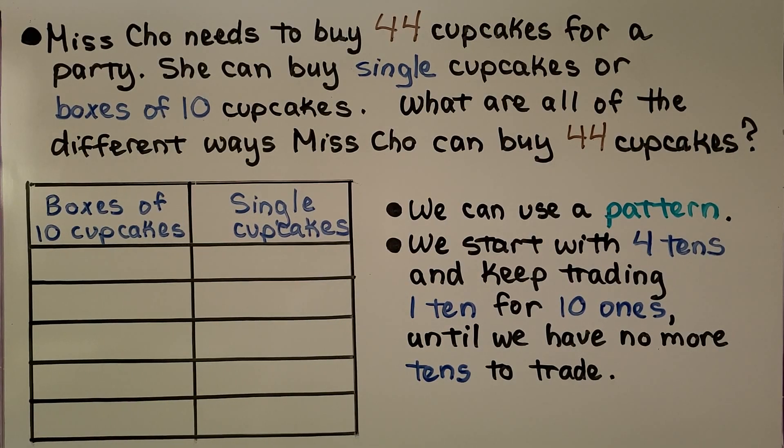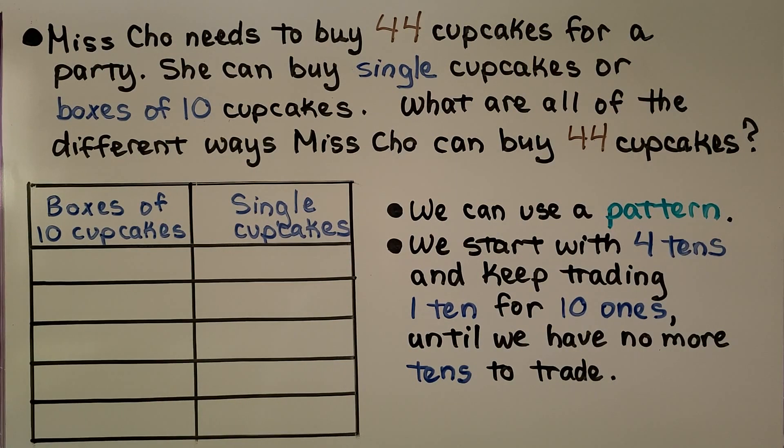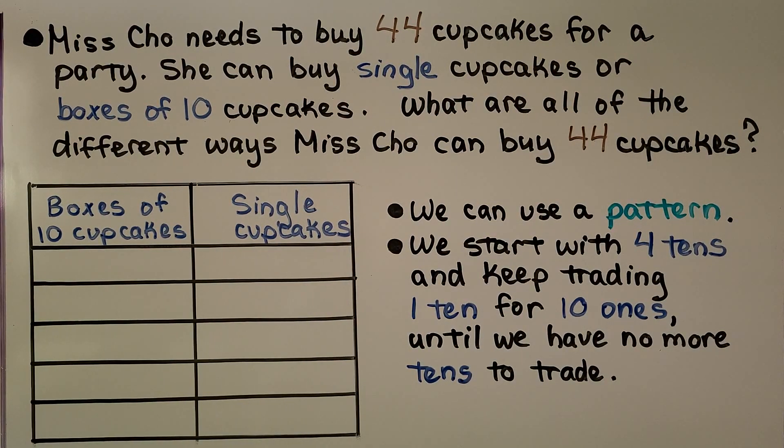Miss Cho needs to buy 44 cupcakes for a party. She can buy single cupcakes or boxes of 10 cupcakes. What are all of the different ways Miss Cho can buy 44 cupcakes? So we have our chart. This is boxes of 10 cupcakes, so it's how many tens. And here's single cupcakes. That's going to be how many ones. Single means 1.